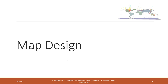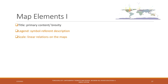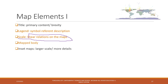Now let's talk about map design. First, let's talk about those basic map elements. A map normally can have a title, and we need the legend and the scale — that tells you the linear relationship between the physical object and the object on the map. And we have the mapped body, and sometimes we need an inset map, so that can tell you more details of the mapped area.